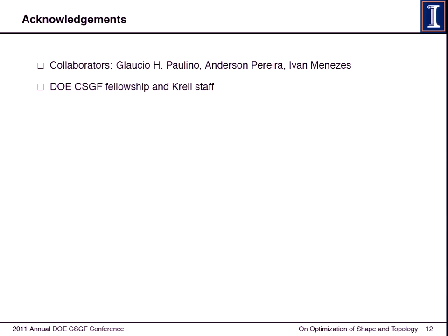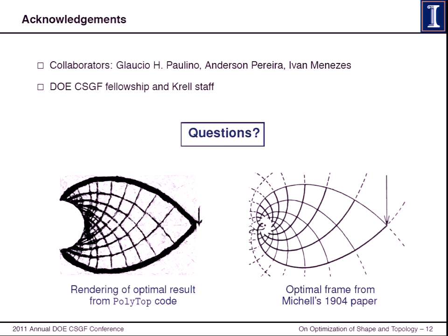With that said, I'd like to acknowledge my advisor and our colleagues in Rio, Puki University in Rio. The CREL staff over the past four years have been extremely supportive, so I can't express my gratitude enough. I'm very grateful for this DOE CSGF fellowship. If you have any questions, I'd be happy to answer them. Just to give you an idea, this is a result from a paper from 1904 on optimal frames. This is the so-called Michel problem, because he's the one that solved it. I did a rendering of a numerical result from actually our code. You can see the similar orthogonal network that formed these optimal shapes for this problem. Thank you very much.